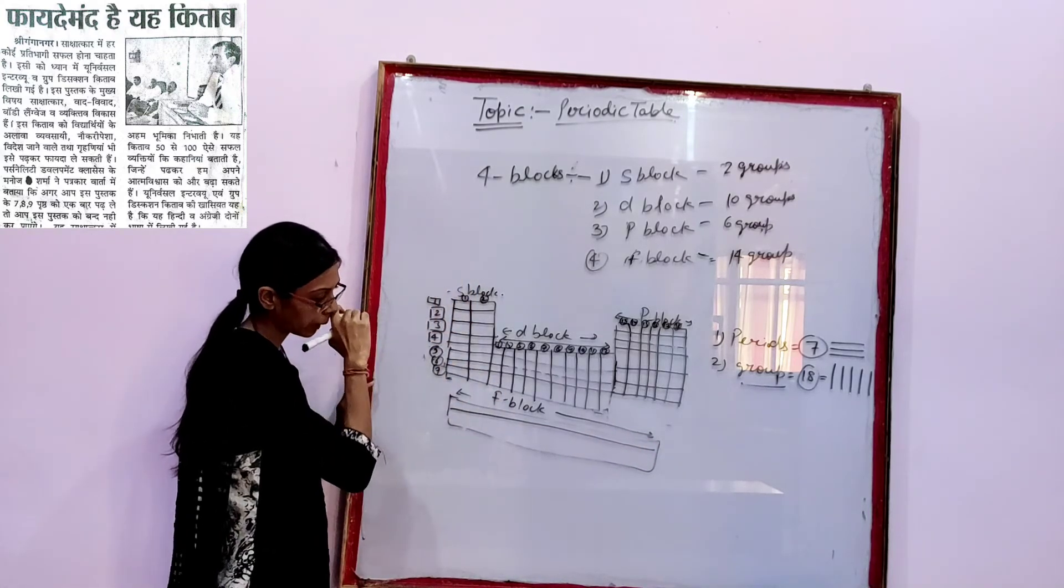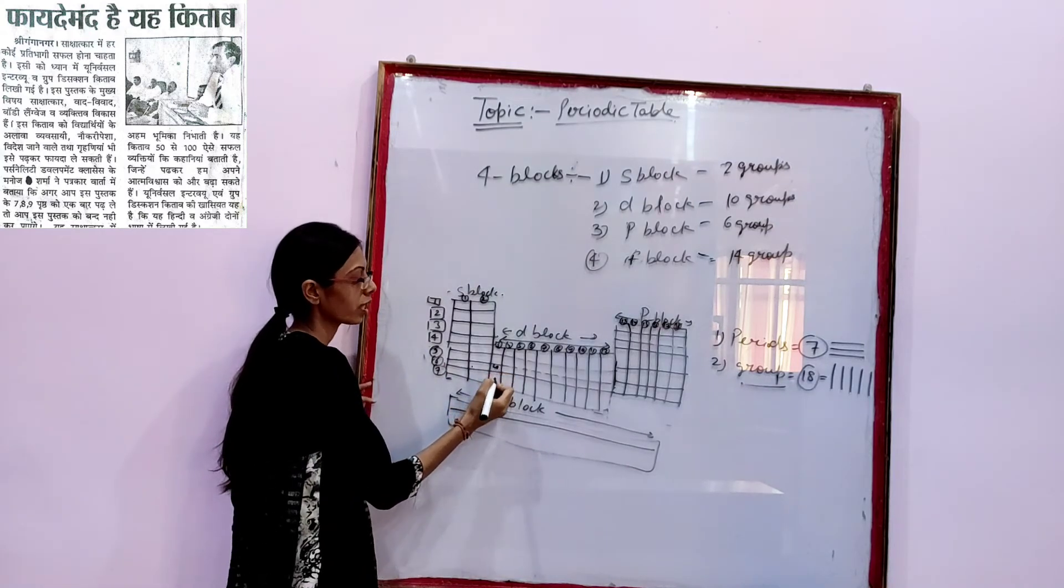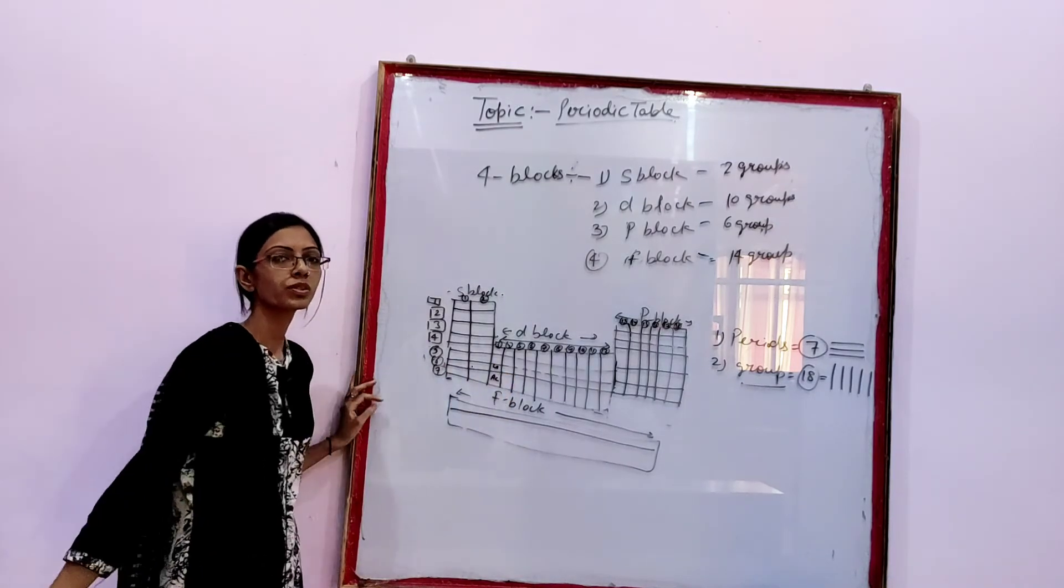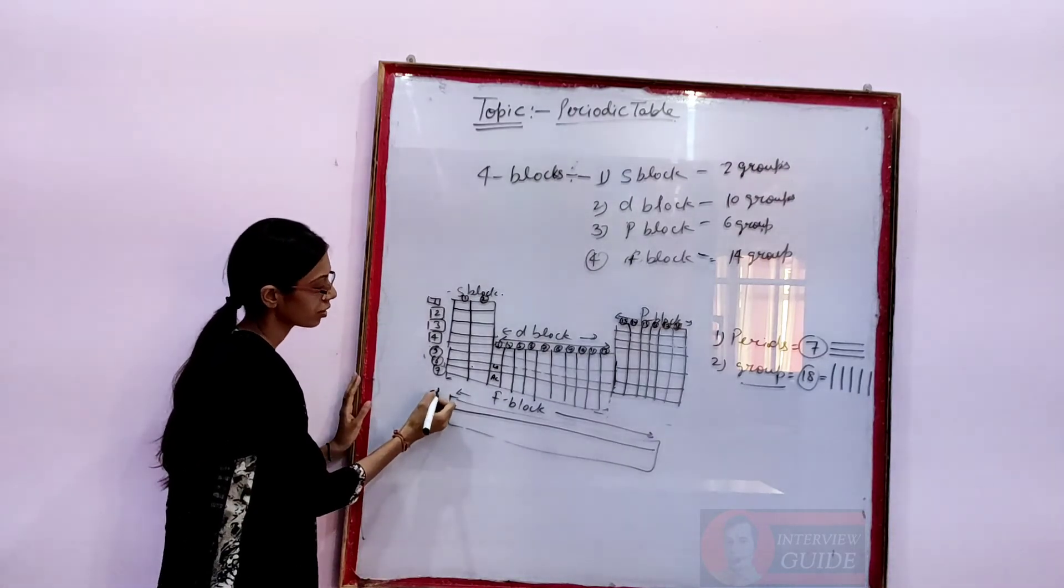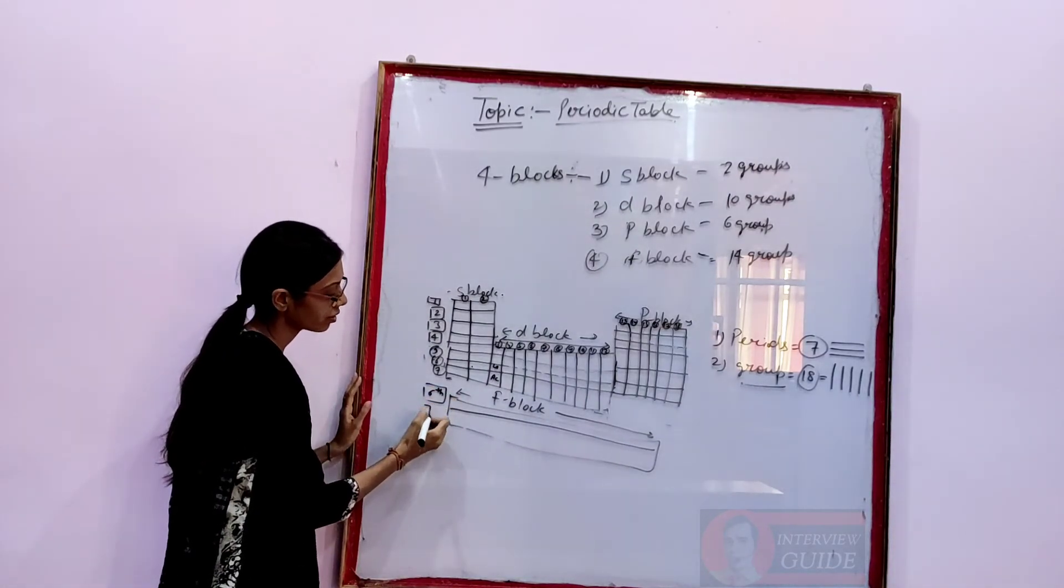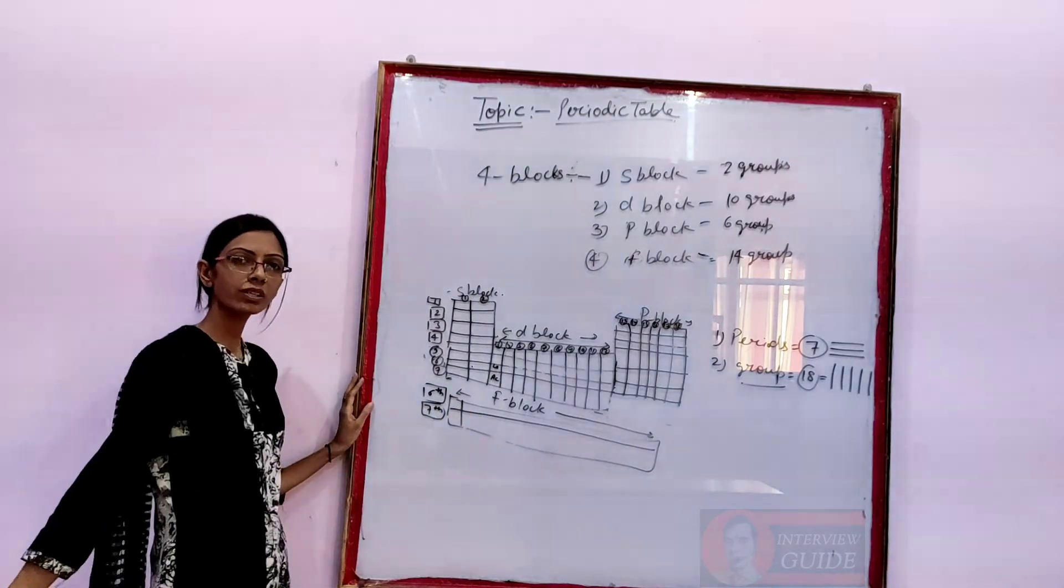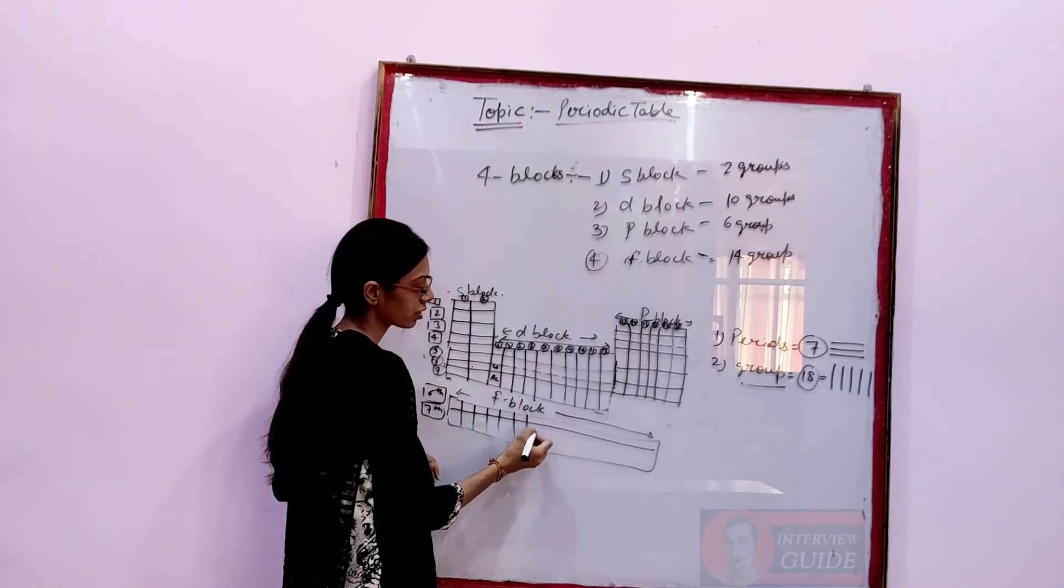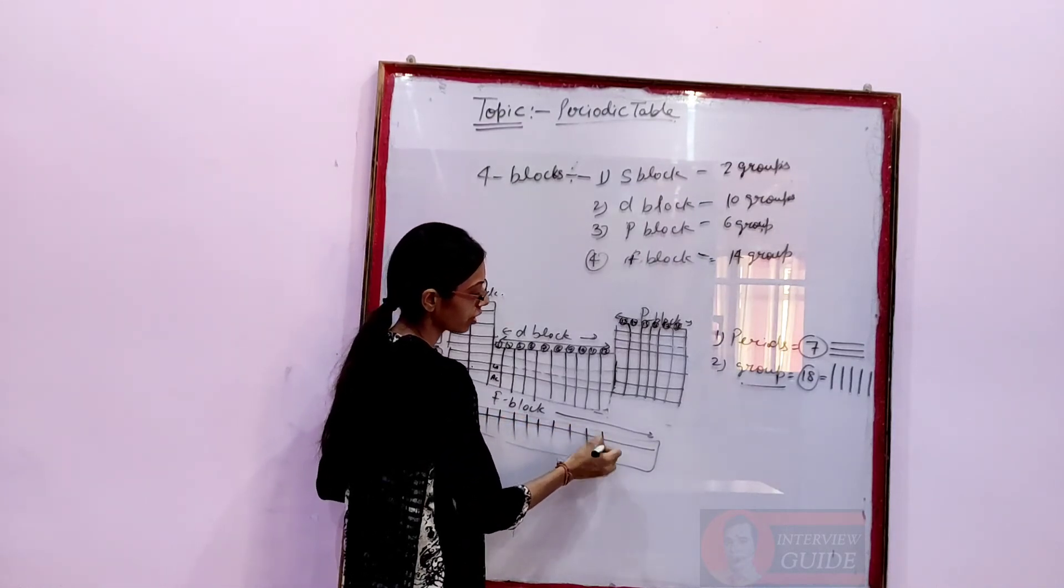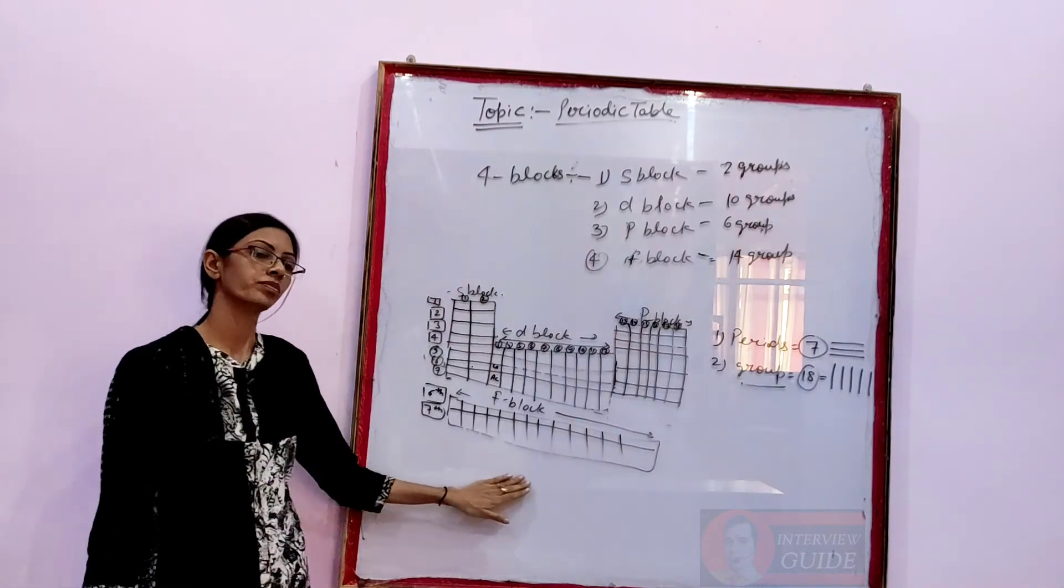When you start your 6th period, you will see that there is lanthanide and actinide. Two series are there, 6 and 7, means there is 6th and 7th period. Again, we have 14 groups: 1, 2, 3, 4, 5, 6, 7, 8, 9, 10, 11, 13. The groups are divided into 14 elements.